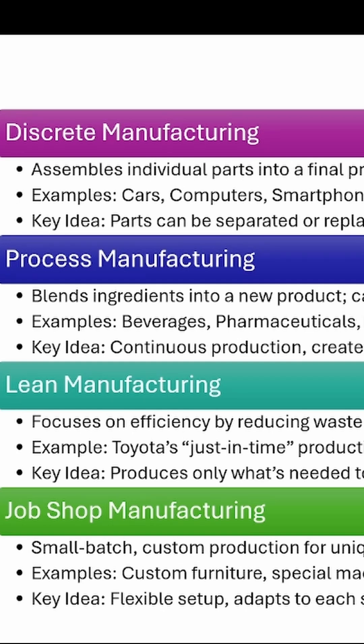Types of manufacturing. Discrete manufacturing is all about putting together individual parts to create one finished good. Examples of discrete manufacturing include a car, computer, and even a smartphone.